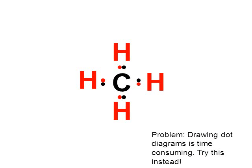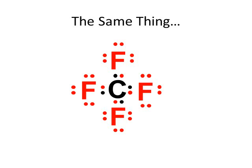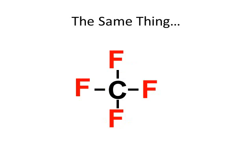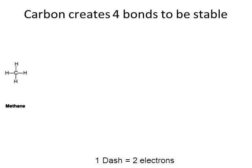These are called Lewis dot diagrams, and they can be a little time consuming to draw. So instead, simply add dashes — each dash represents two electrons. A dot diagram with carbon in the middle and four fluorines around the outside is the same as this dash diagram, which is much simpler. One dash equals two electrons. Because carbon can bond up to four times, it's often involved in some very complex molecules.